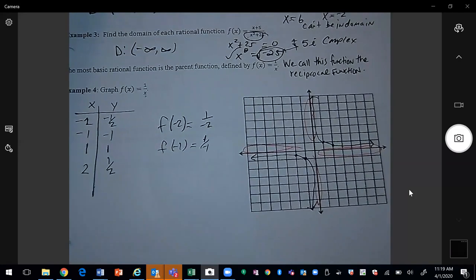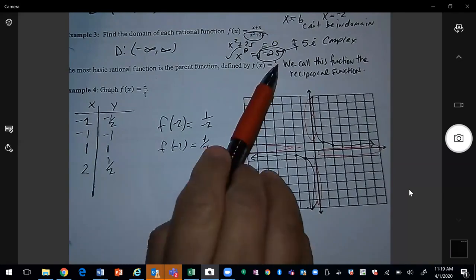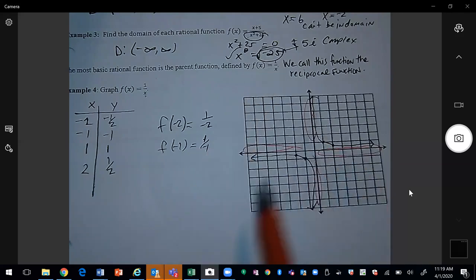This function is also called the reciprocal function. So anything that looks like a rational function will have a similar shape or similar type of graph.